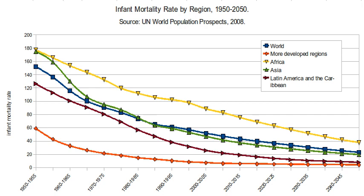The 2009 CDC report outlined differences in reporting requirements between the United States and Europe, noting that France, the Czech Republic, Ireland, the Netherlands, and Poland do not report all live births of babies under 500 grams and/or 22 weeks of gestation. However, the differences in reporting are unlikely to be the primary explanation for the United States' relatively low international ranking. Rather, the report concluded that the primary reason for the United States' higher infant mortality rate compared with Europe was the United States' much higher percentage of preterm births.